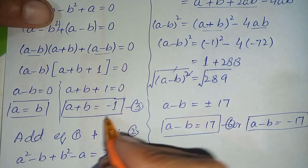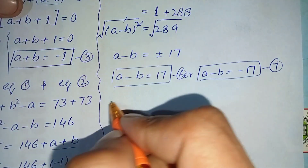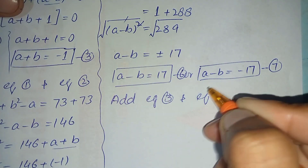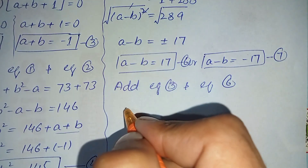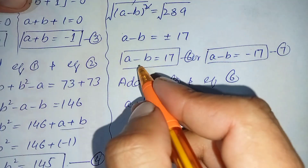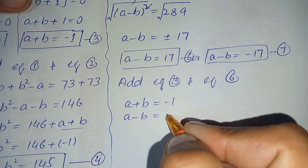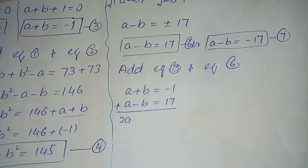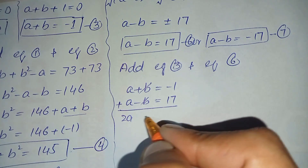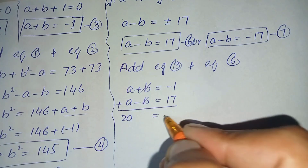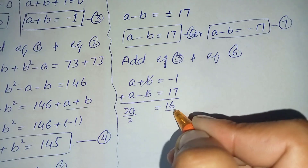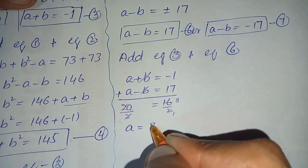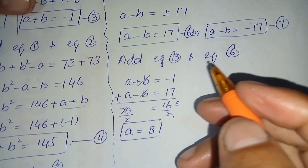We add equation number three and equation number six to find the value of a. Adding (a plus b equals minus 1) and (a minus b equals plus 17): the b terms cancel, giving 2a equals 16. Dividing both sides by 2, a equals 8.